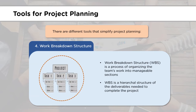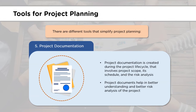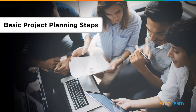The fourth tool is Work Breakdown Structure. Work Breakdown Structure is a very common tool that makes it possible for the team to break its work into manageable sections. It is a step-by-step process that helps in completing the project efficiently. The last tool is project documentation, which is an integral part of the project lifecycle. Project documentation helps in understanding the mistakes made during the project and, more importantly, provides guidelines for upcoming projects.